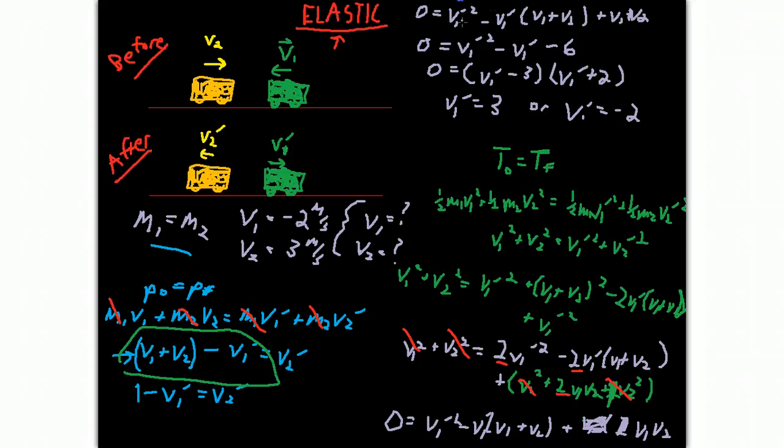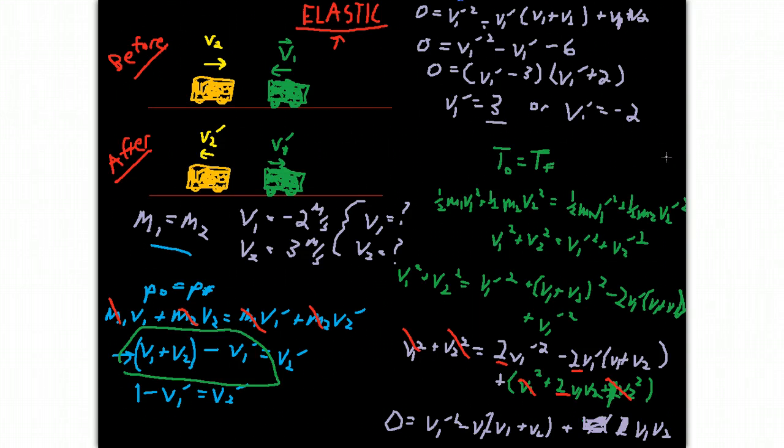So I'm just continuing up here from down here. I rewrote that last line. So I have 0 equals V1 prime squared minus V1 prime times the quantity of V1 plus V2 plus V1 times V2. And when I plug in numbers, I get 1 as the coefficient, actually negative 1, because I still have that negative sign that I have to carry through. But this will just be 1, in this case, 3 minus 2. And then I have plus 3 times negative 2, or negative 6. And this actually works out very nicely, these numbers, and I can foil it. And then I can solve for V1 prime. And V1 prime is equal to either 3 meters per second or negative 2 meters per second. And both of these have meaning.